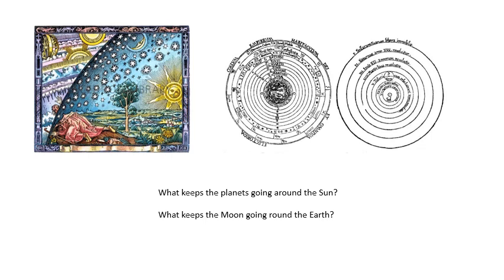Before Newton, we really didn't know. It was thought that all of these planets going around the earth were on crystal spheres, and these spheres were carried around by angels. Basically, scientifically, we didn't know.